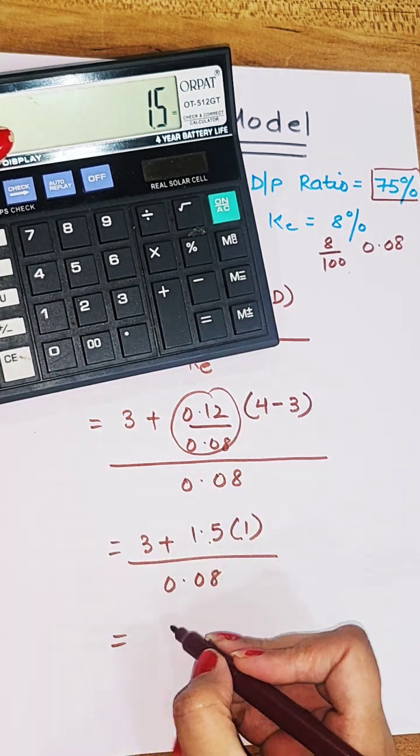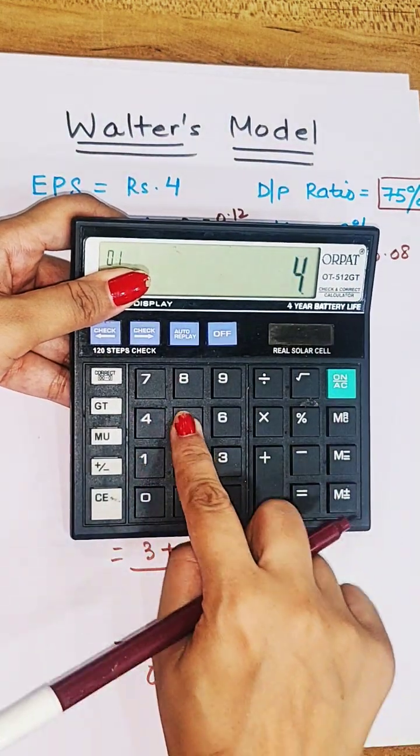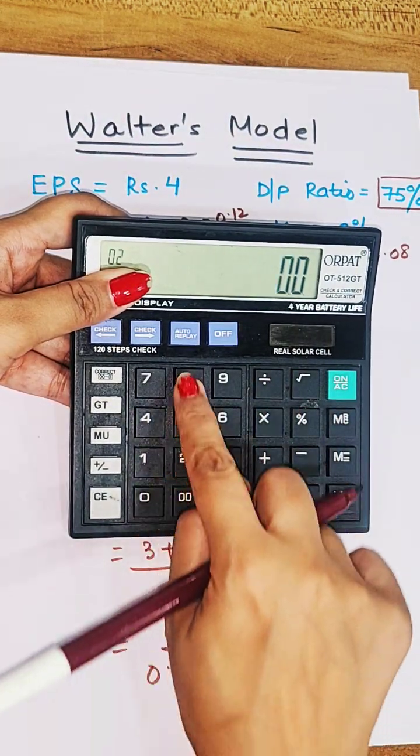So 1.5 into 1 will be 1.5, so 3 plus 1.5 is 4.5, dividing it by 0.08.